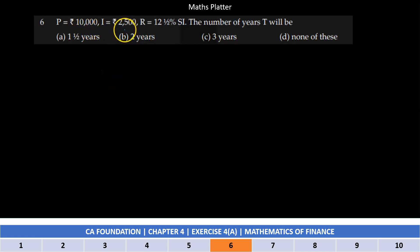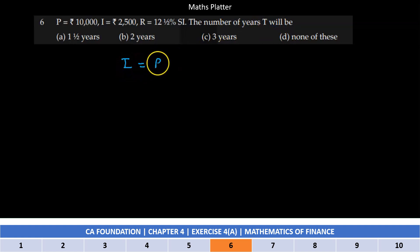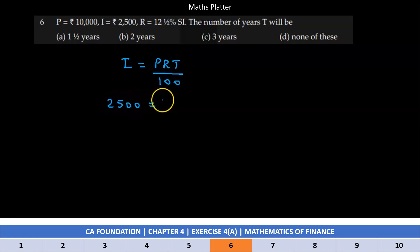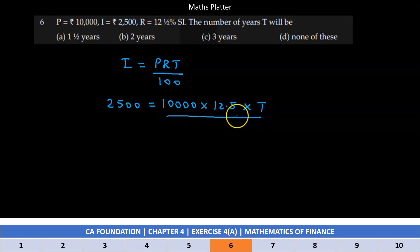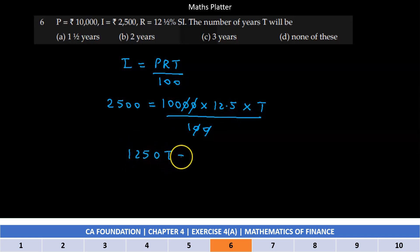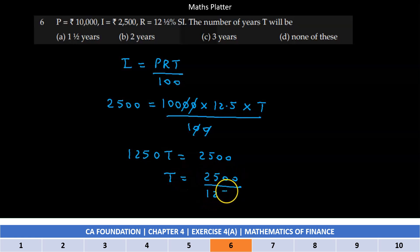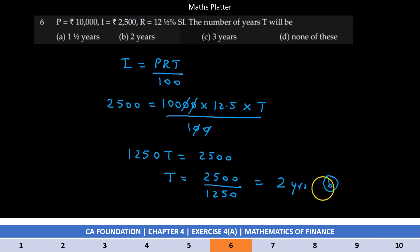Principal is 10,000, simple interest is 2,500, rate is 12.5% per annum. The number of years T is to be found. Using I equal to PRT upon 100: 2,500 equals 10,000 into 12.5 into T, divided by 100. Two zeros cancel out, so 100 into 12.5 into T equals 2,500, which gives T equals 2,500 divided by 1,250, equal to 2. The correct answer is 2 years, which is Option B.